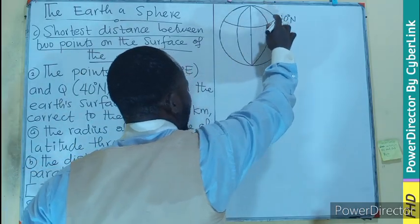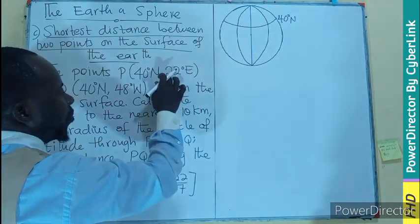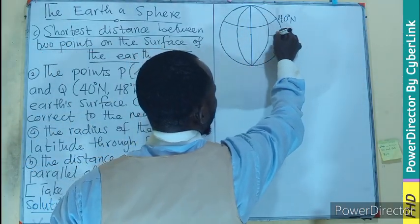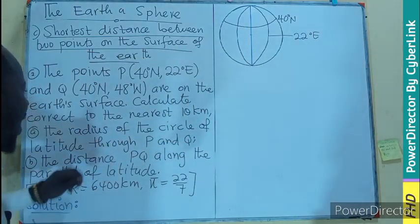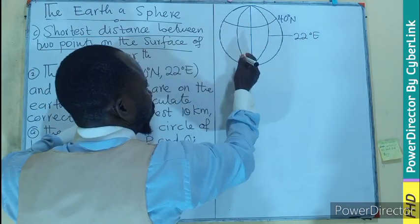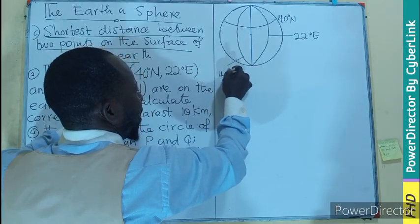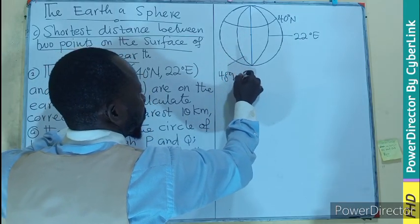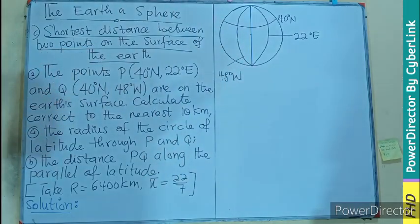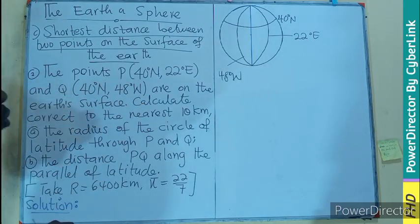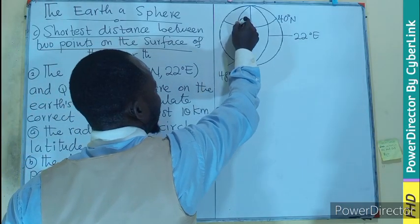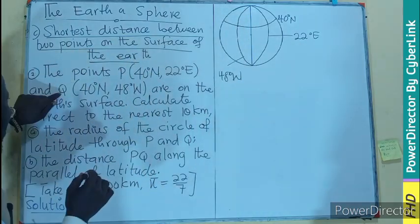Then the longitude here is on the east. So that would be 22, that would be at 22 degrees east. Then this is on the west. So that would become 48 degrees west. So the latitude 48 degrees is discovering the point Q. So where they meet, it's going to be Q, right?